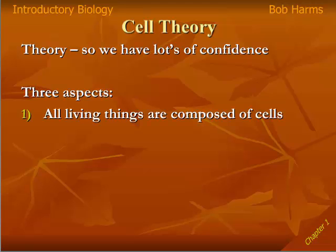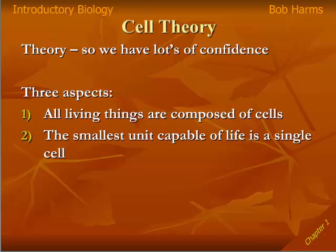The first part of the cell theory is that all living things are composed of cells, and this is probably as close to a definition of life as we can come up with — you might want to put an asterisk by this one. If all living things are composed of cells, what's the smallest living organism we can have? Obviously that would be one cell. So the second corollary is that the smallest unit capable of carrying out all the processes of life is a single-celled organism.